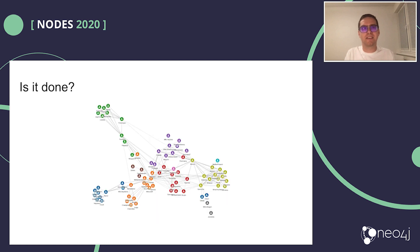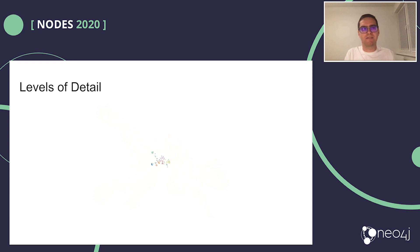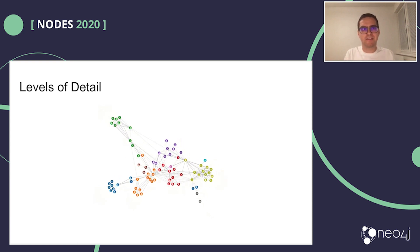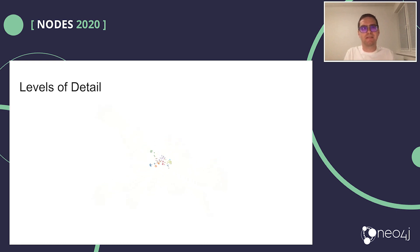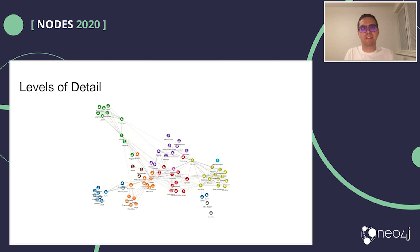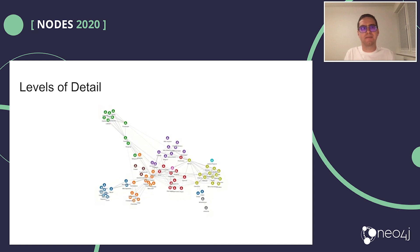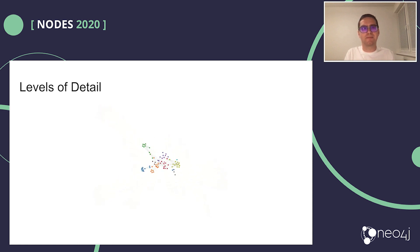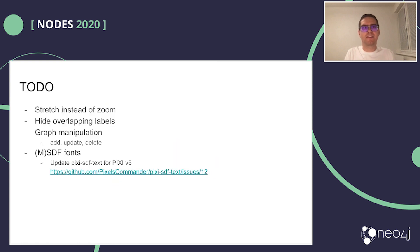And here's the result. It's not done yet — there are many features that can be added. For improving readability, I implemented separate levels of detail by zoom level. When zooming out, first node labels disappear, then node icons disappear, and then edges disappear. This also gives a nice performance boost when zoomed out. There are many features still left to do, such as stretching the distance between nodes when zooming, hiding overlapping labels, or graph manipulation.